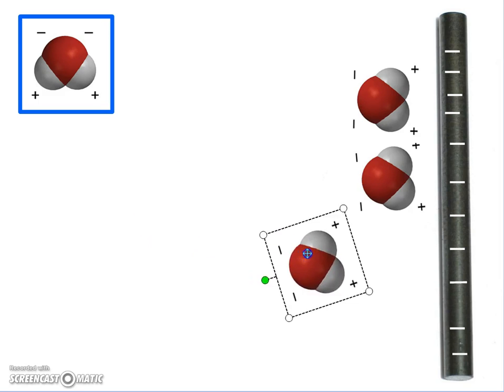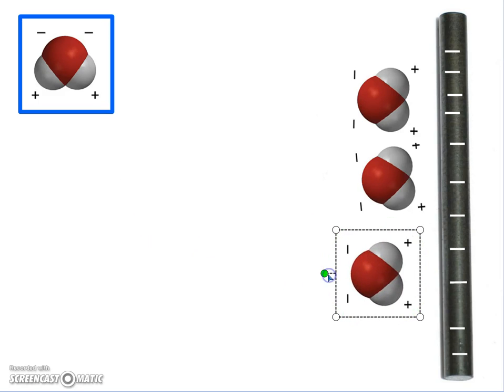That's where you see the bending—the positive parts of the molecule attract to the negative rod. This demonstrates a polar molecule. The next video will look at how to decide if a molecule is polar.